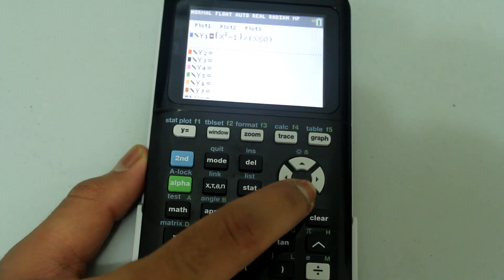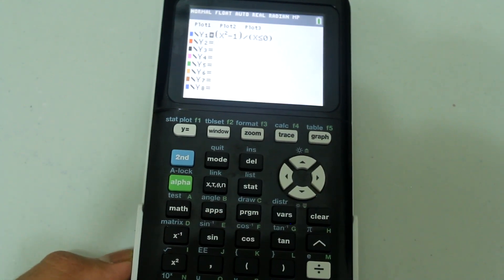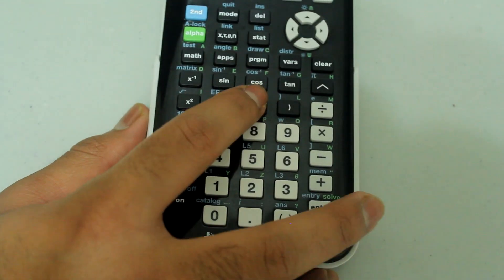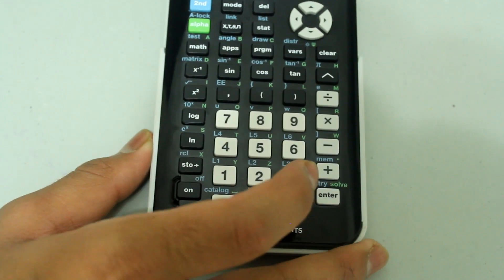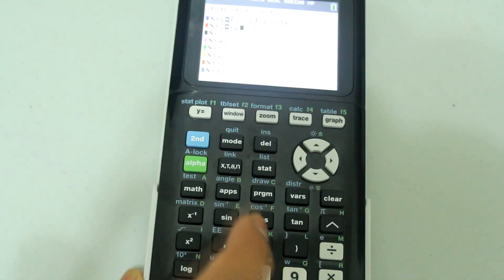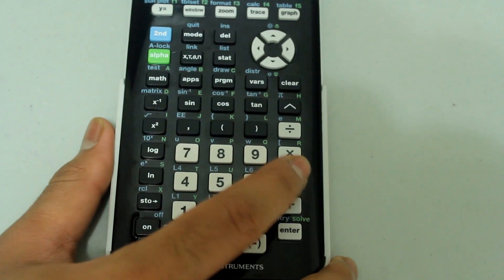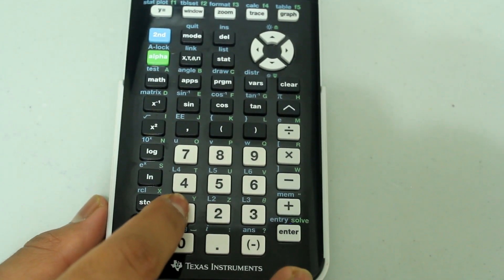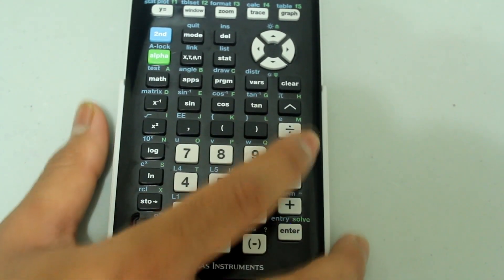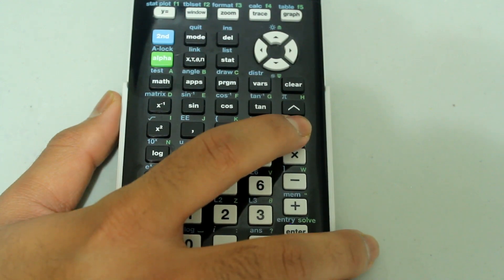And we're going to go down and type in the second piece. So open a parenthesis, type in 2x - 1, close that parenthesis, press the division sign.